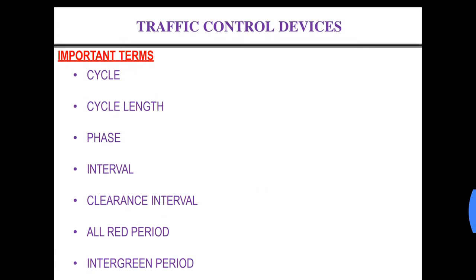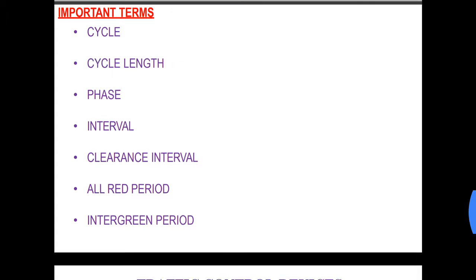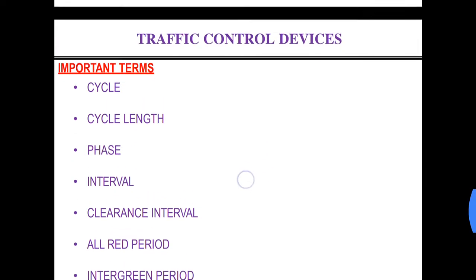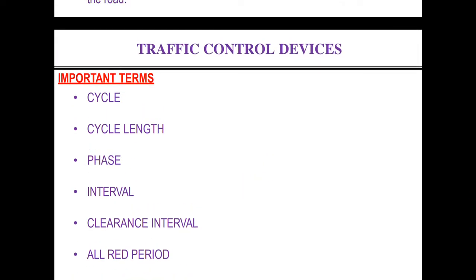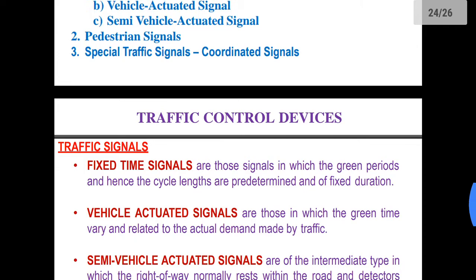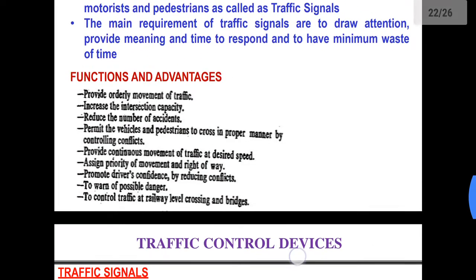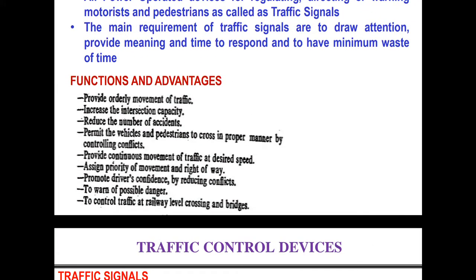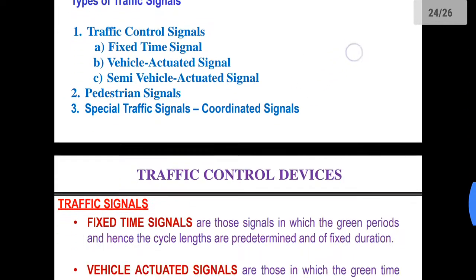Cycle length is nothing but the total interval or the total time for one cycle. Phase: phases are the different durations or different signals that we provide. There are three signals as mentioned earlier — red, amber, and green. These three are the three different phases.